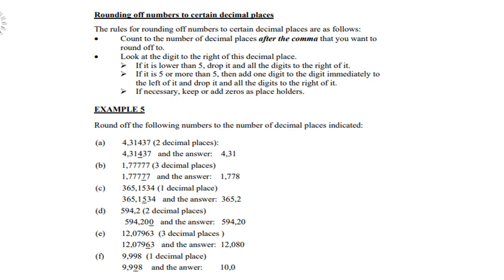Round off the following numbers to the number of decimal places indicated. Let's look at 4.31437. Round off to two decimal places. So what do you do? You go to the third decimal which is 4, which is below 5. So you drop the 4, 3 and the 7. Look at B, 1.77723, three decimals. So you go to the fourth 7, which is higher than 5. So therefore you round the third 7 up to 8.